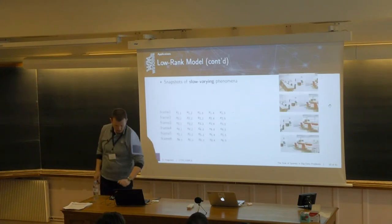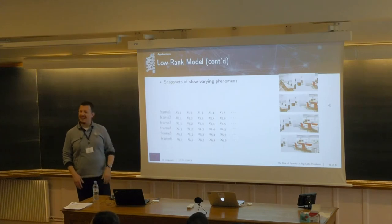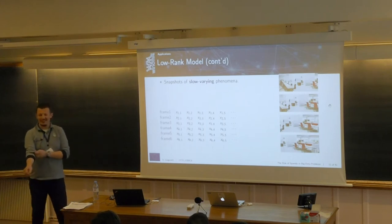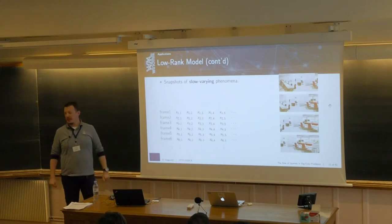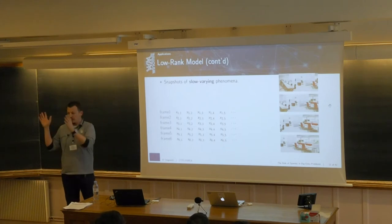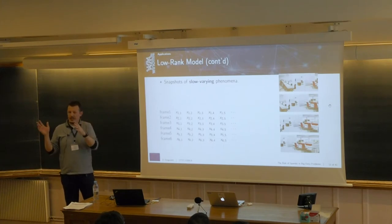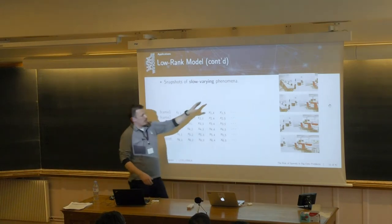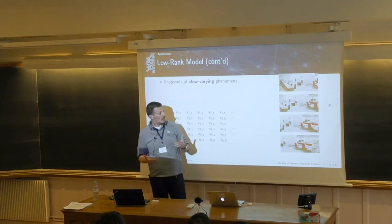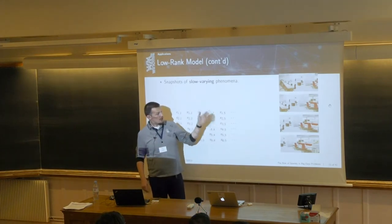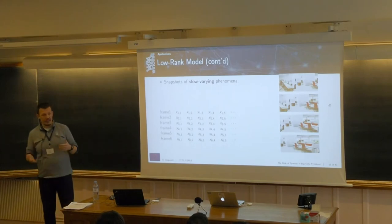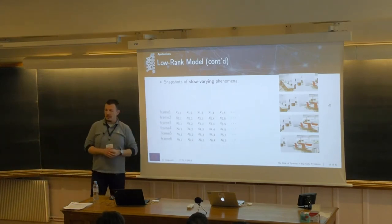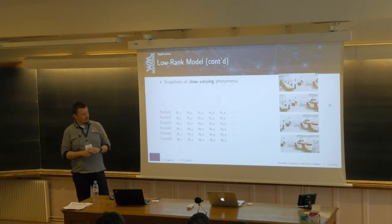Take video surveillance as an example. A camera continuously sweeping a room produces frames where the background doesn't change much between snapshots, and the same scene recurs again and again. This repetitive, slowly-changing structure is one reason we can model such data as a low-rank system.